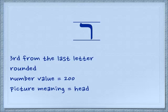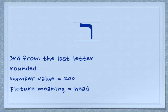Our second letter is the Resh. It's a third from the last letter, and it's rounded in the back. The number value is 200 and the picture meaning is head. If you're familiar with Rosh Hashanah or Rosh Chodesh, that Rosh is the name of the letter Resh — it means head. You will hear a lot of different pronunciations: the true Israeli Resh is in the back of the throat, maybe like the French. There are also Russians and Spanish speaking people who use a forward rolled R. I'm going to use an English pronunciation so it will be easy for you to hear.